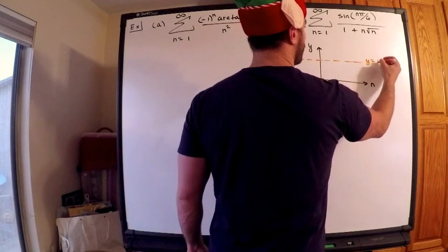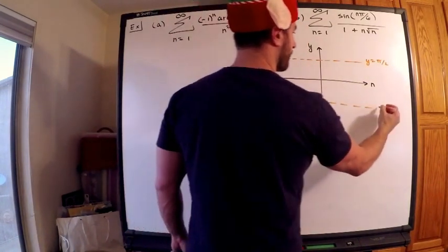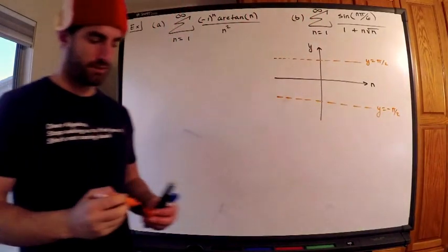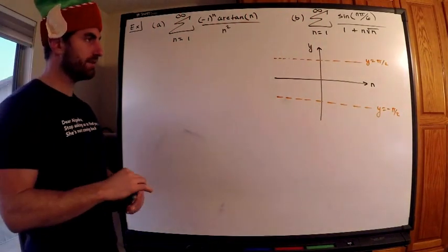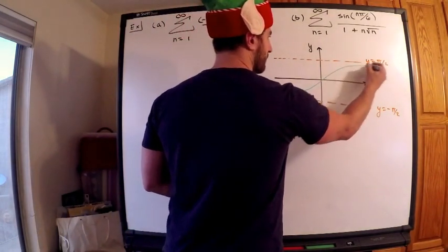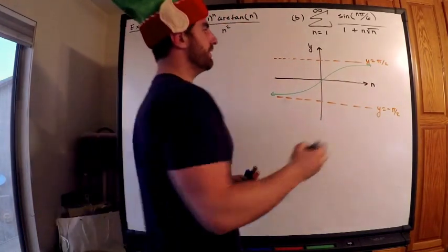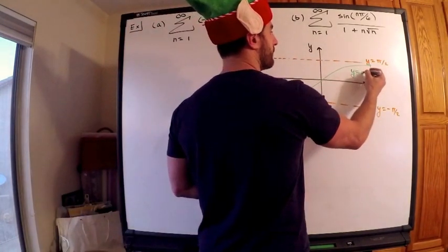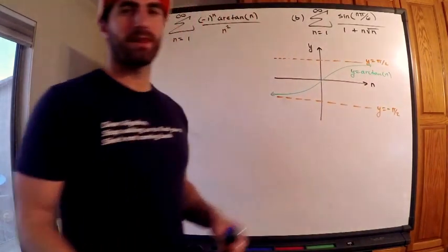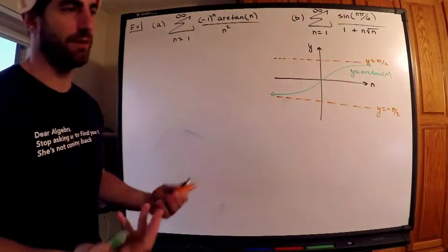This is y equals pi over 2, and down here, this is y equals negative pi over 2. So arctan is bounded by those two, and it looks something like this. This is one of the graphs you absolutely do need to know. So this is y equals arctan of n. I mean, essentially, it looks like a tangent graph, but it's sort of rotated, right, and flipped.